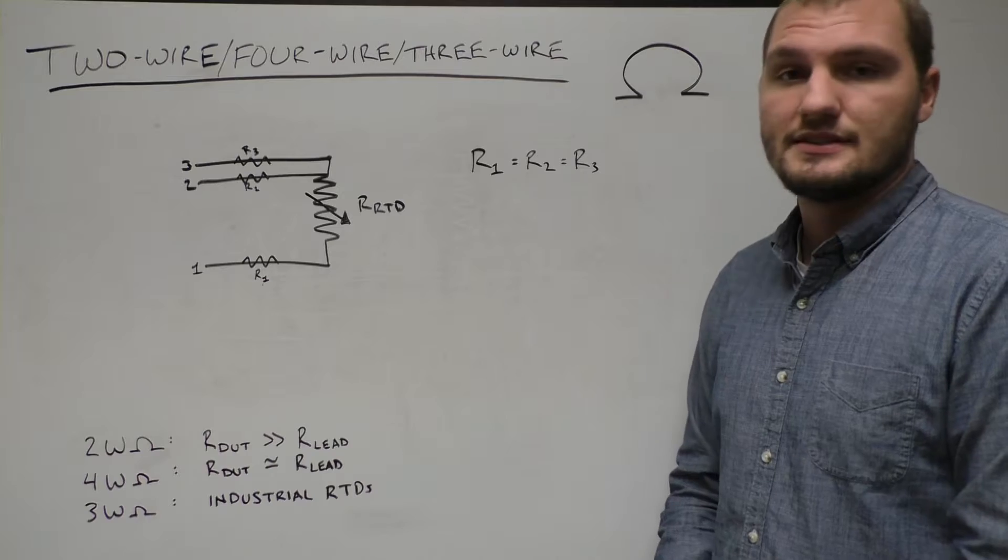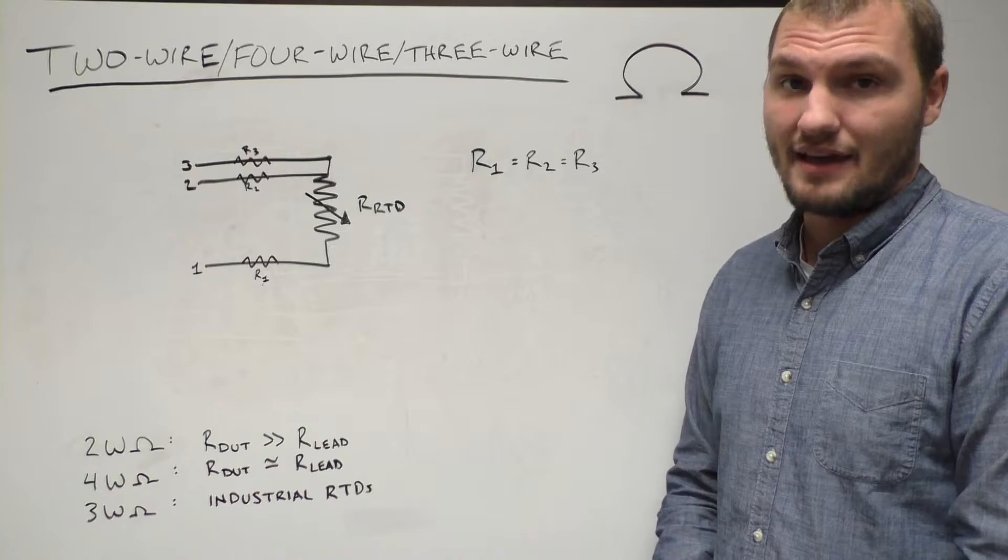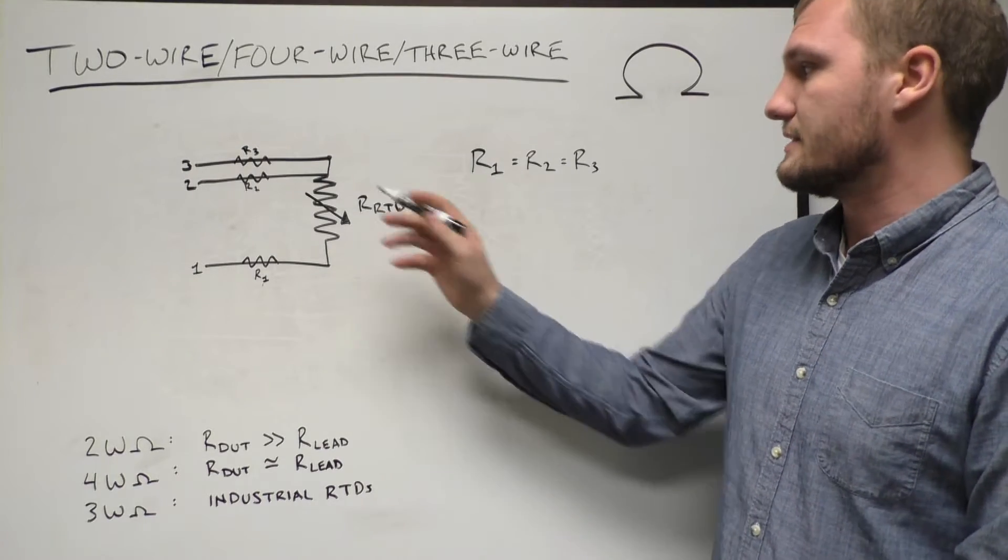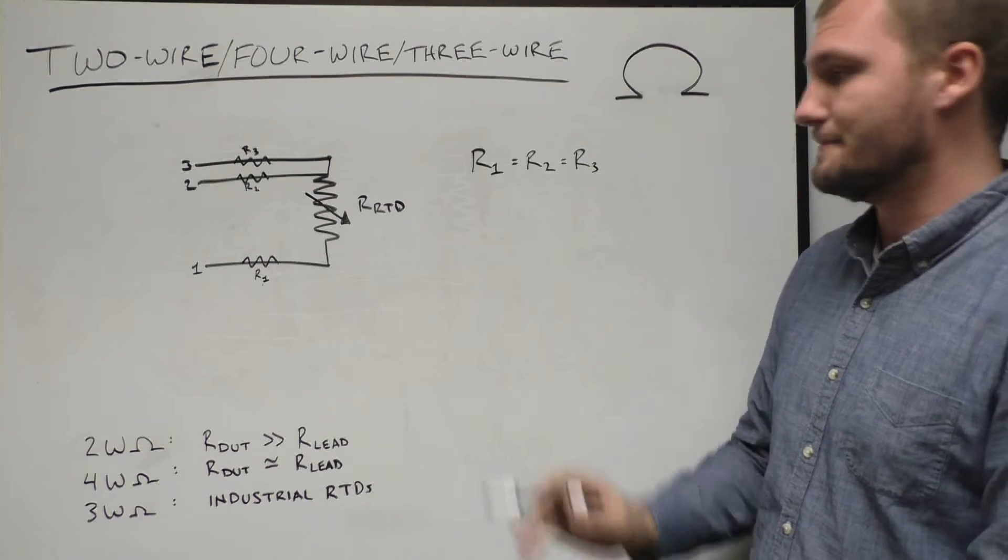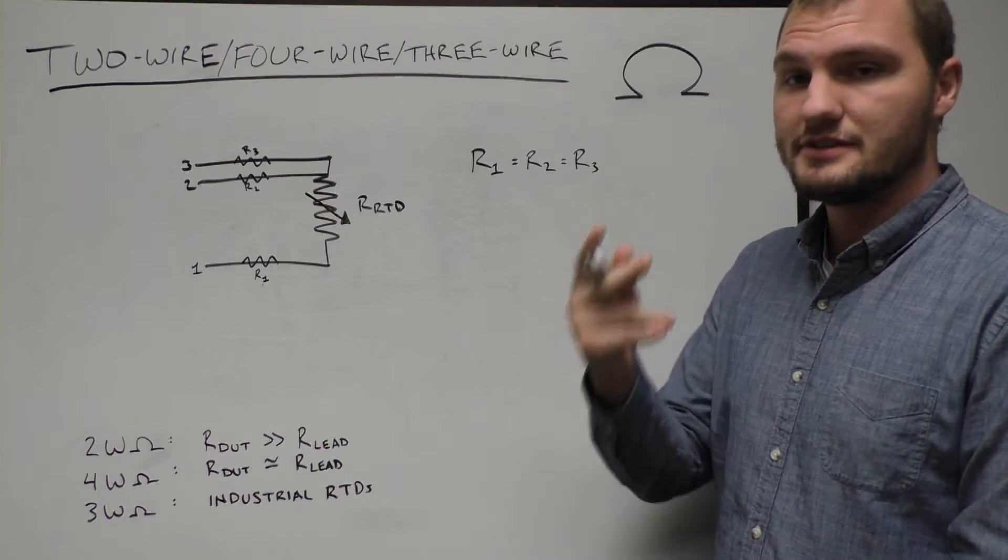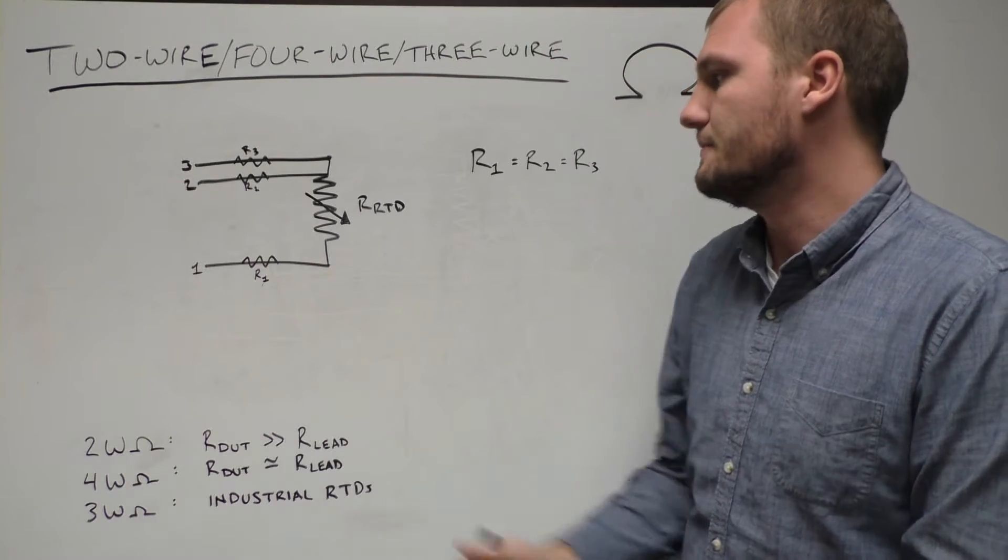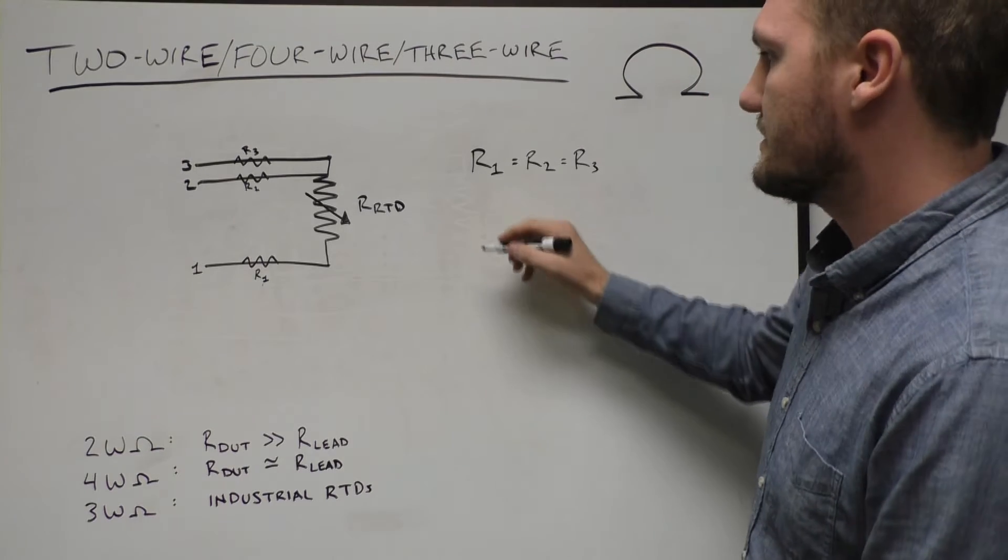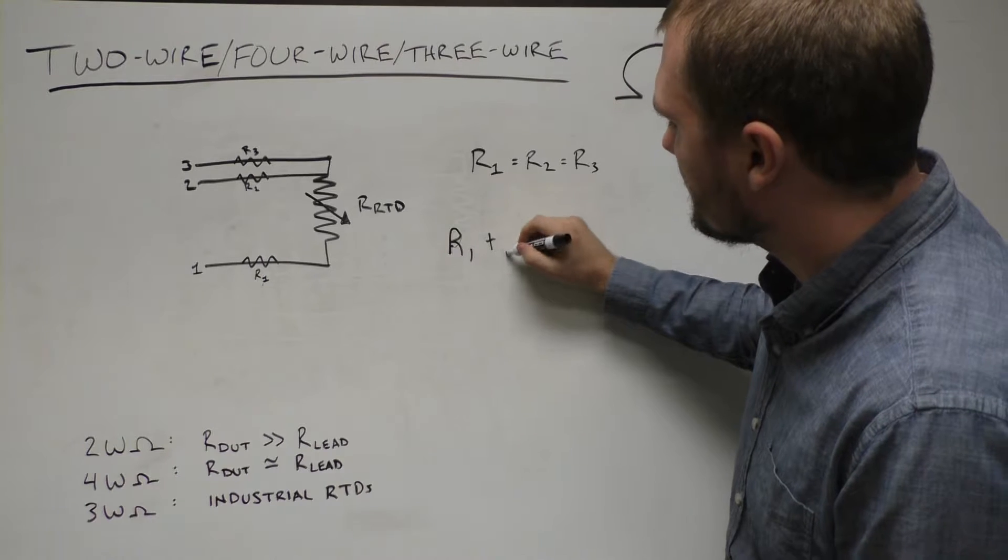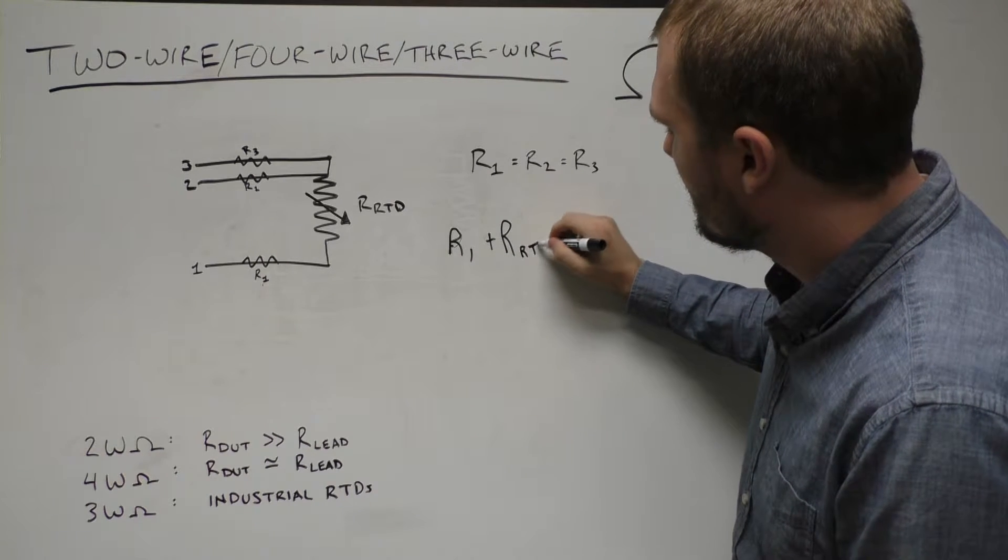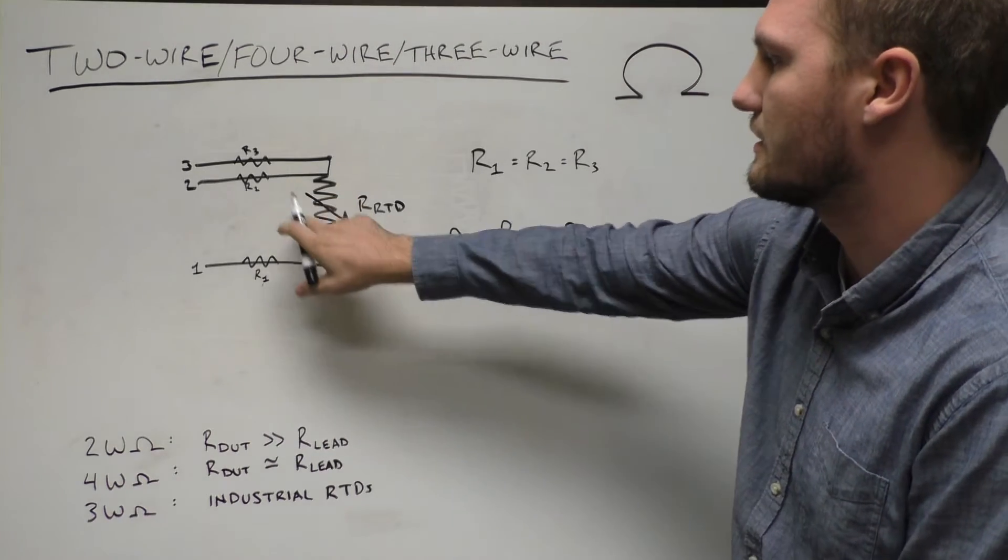The idea here is that rather than using the circuit to eliminate the lead resistance, we're going to use math. So, one of the caveats of 3-wire is that all three of the leads need to have the exact same resistance. And now what you do is you make two separate two-wire measurements. You make a two-wire measurement between points 1 and 2, which gives you the resistance of R1 and R of the RTD and R2.